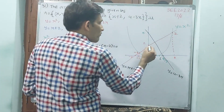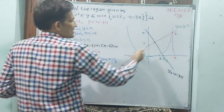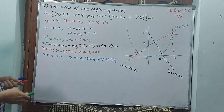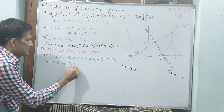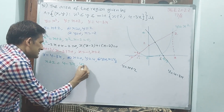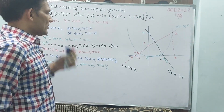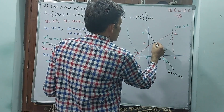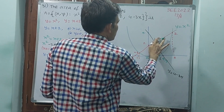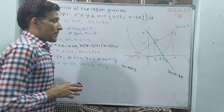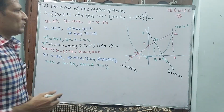Now I want to find the intersection of the two lines y = x+2 and y = 4−3x. Setting them equal: x+2 = 4−3x gives 4x = 2, so x = 1/2. This intersection point is at x = 1/2.